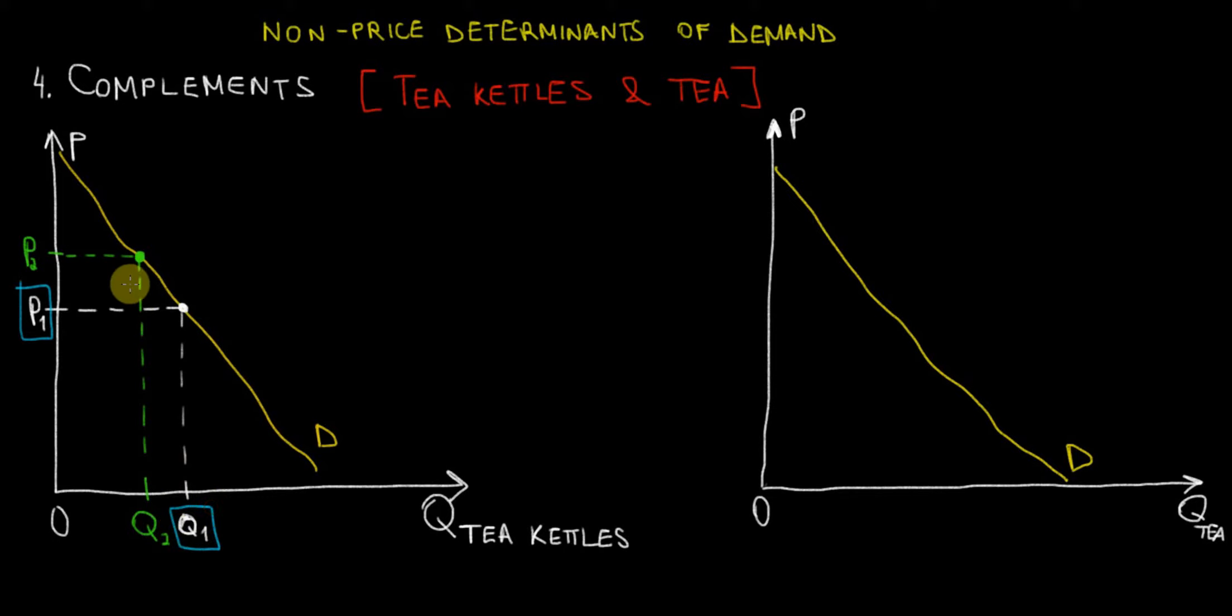Suppose now that tea kettles become more expensive, so the price increases from P1 to P2. At the price level of P2, we have a corresponding quantity of Q2. This means that the quantity demanded for tea kettles decreases.